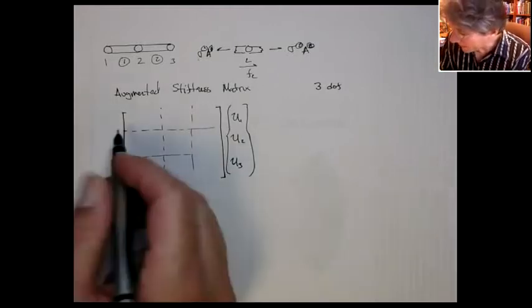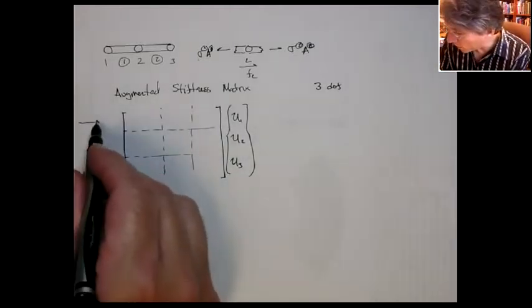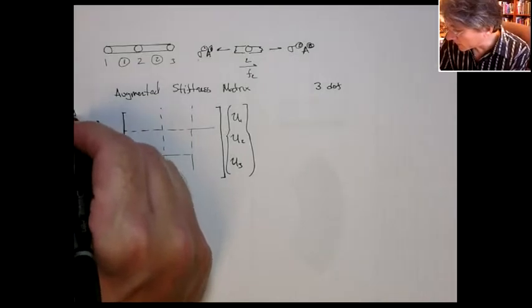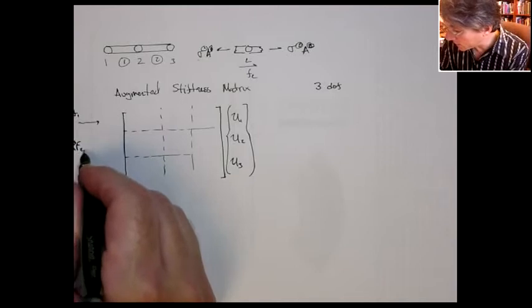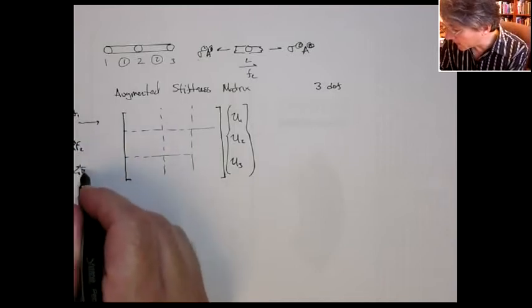So if you think about it, each row corresponds to a sum of forces at node 1, sum of forces at node 2, and sum of forces at node 3.